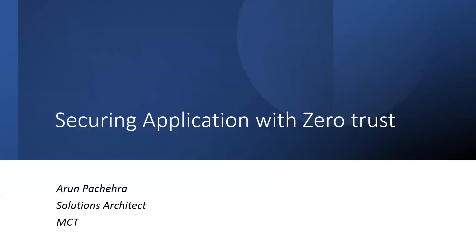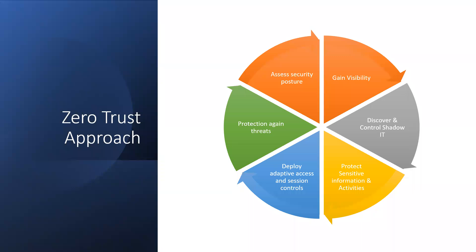In this video, we are going to secure applications with Zero Trust. The key question is: how can we apply Zero Trust on applications? We know Zero Trust is based on verify explicitly, least privilege, and assume breach. These are the core principles of Zero Trust, and our approach is based on these principles, which simply means we need to gain visibility first.